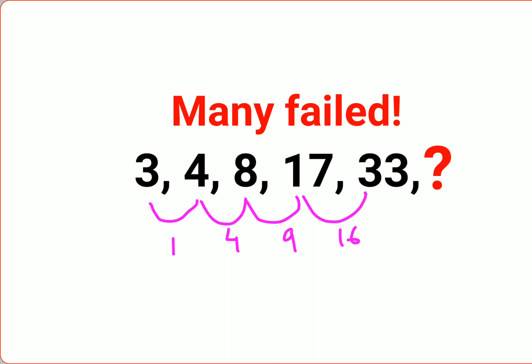So now if you see, if you look at the difference itself, pay attention—this becomes 1 squared, 2 squared, 3 squared, and 4 squared. So the next difference should be what? If it is squares of all the consecutive numbers...